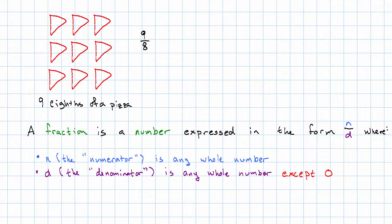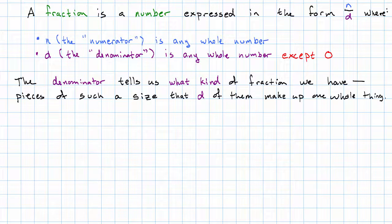So why these rules? The reason that we have exactly these rules is because of what the numbers mean. In particular, I'm taking pieces of such a size that d of them, whatever number d is, that many, make up one whole thing.